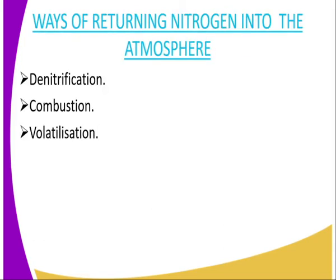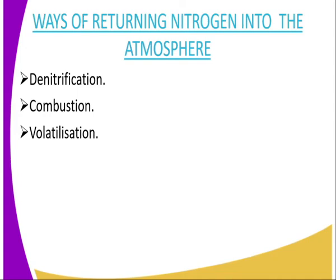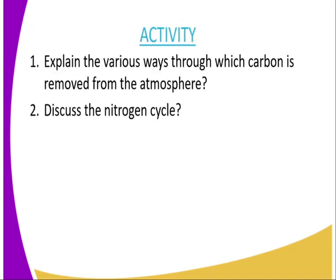Ways through which nitrogen is returned to the atmosphere: the first is denitrification, the second is combustion, and the third is volatilization. During volatilization, compounds are decomposed in the presence of heat, changing from solid state to gaseous state — especially nitrogenous compounds — producing gases which are returned into the atmosphere.